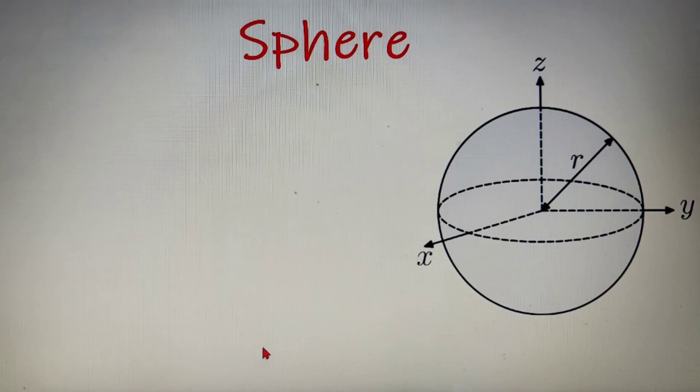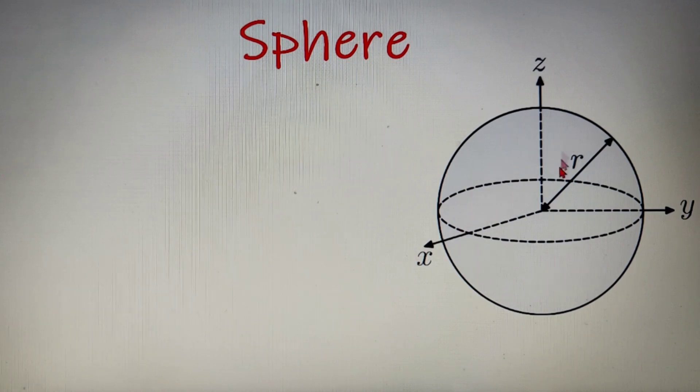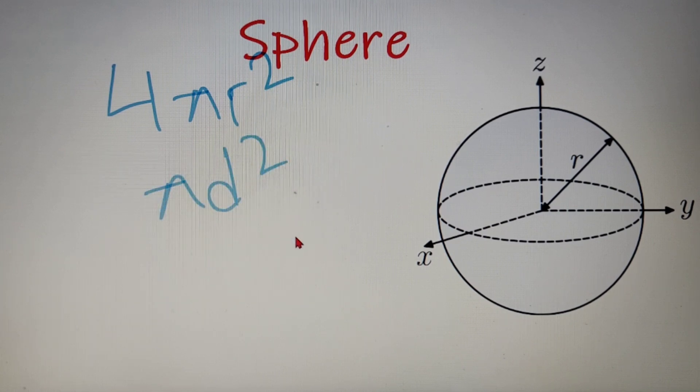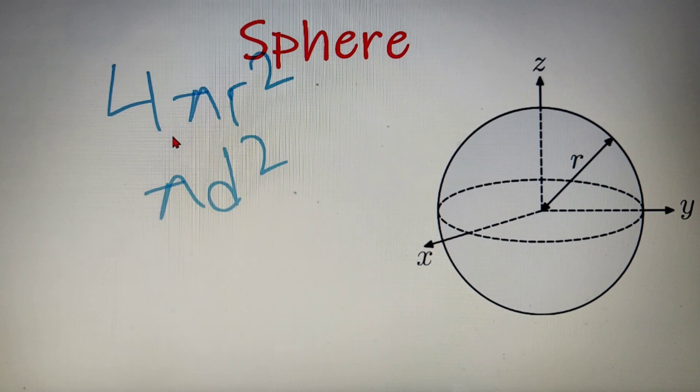Now moving on to the surface area of the sphere. The surface area of the sphere is simply that area that is covered when the sphere is rolled along a surface. Now the value of the surface area of the sphere comes out to be 4πr² and 4πr² can also be written as πd². Now this is because d is equal to twice of r and d² is equal to 4r². So 4r² can be replaced with d². So 4πr² is equivalent to πd².